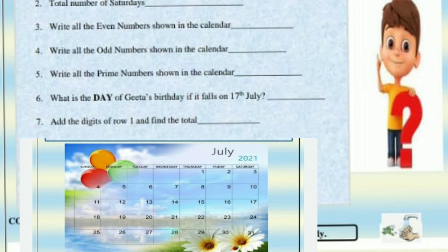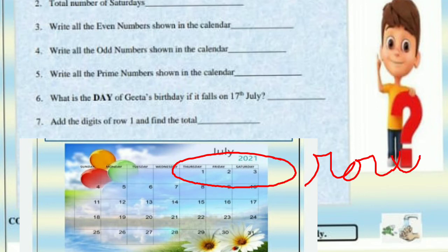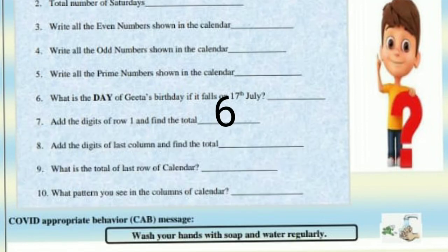Seventh: add the digits of row 1 and find the total. What is a row? In the calendar, the numbers 1, 2, 3 form a row. We have to add these together, and the total comes to 6. So we write 6.